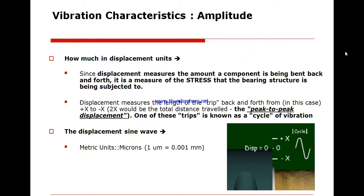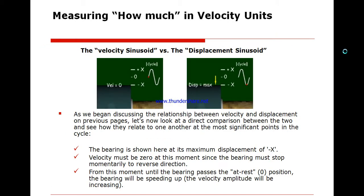To understand the second amplitude unit — velocity — we recognize that the bearing moves backward and forward a certain distance and achieves a maximum speed during the cycle. We study velocity versus displacement: when the bearing is at the maximum position plus x, the velocity must be zero, since the bearing momentarily stops to reverse direction.